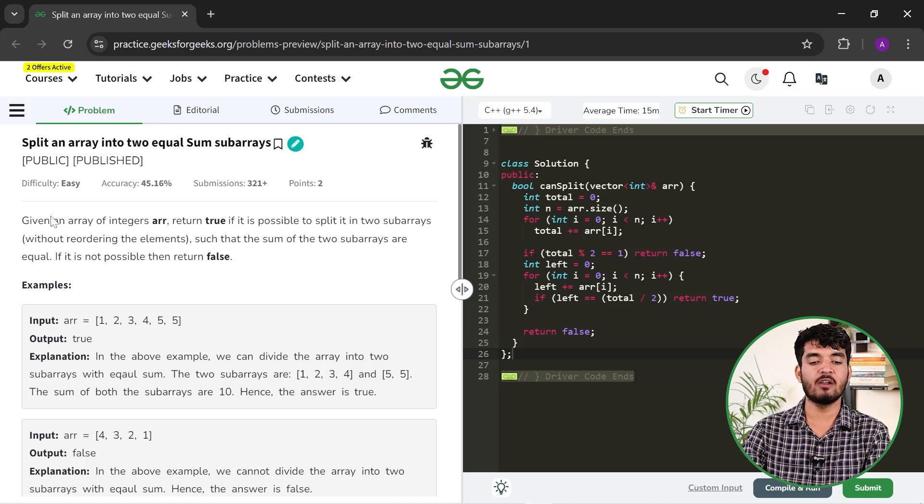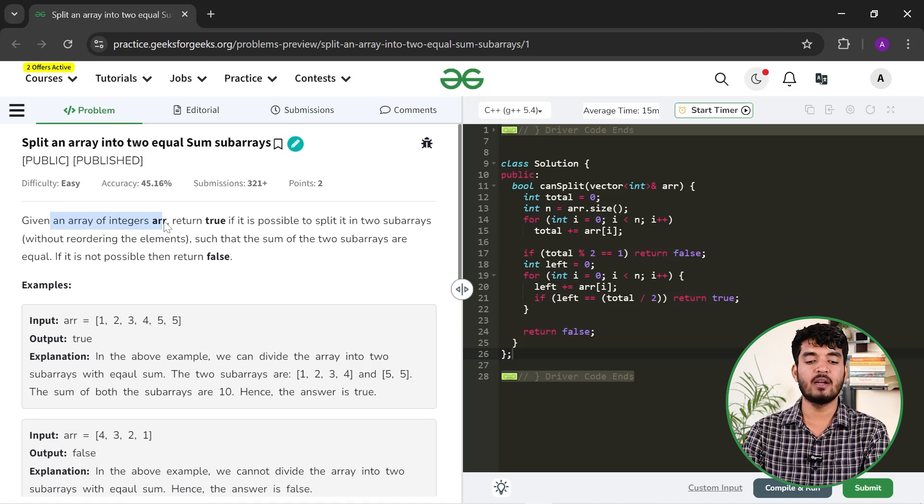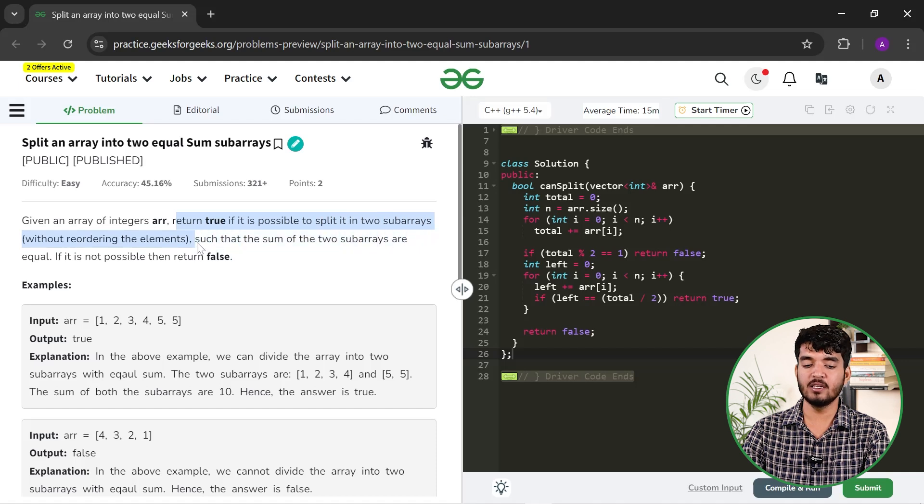In this problem, you are given an array of integers ARR and you have to return true if it is possible to split it into two subarrays without reordering the elements such that the sum of the two subarrays are equal. If it is not possible, then you have to return false.